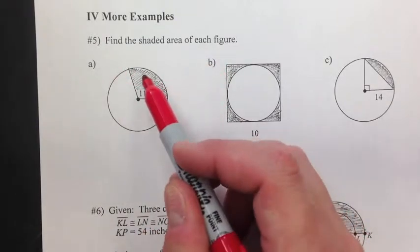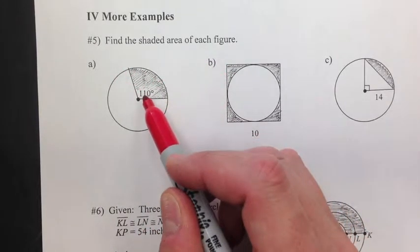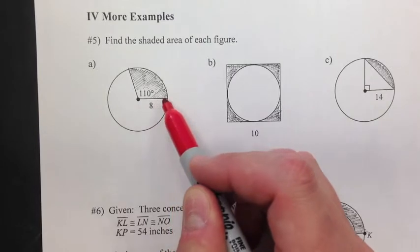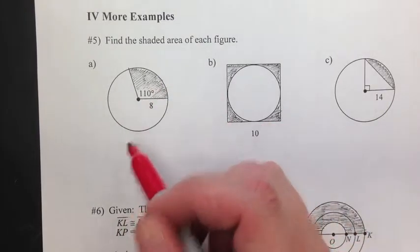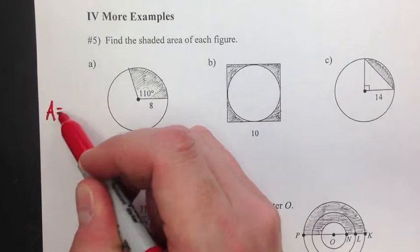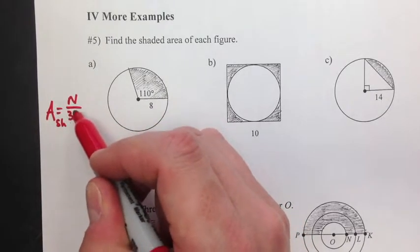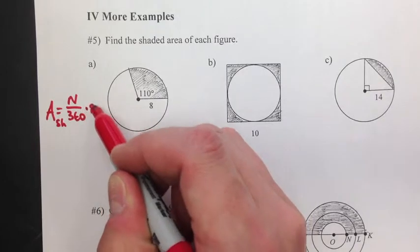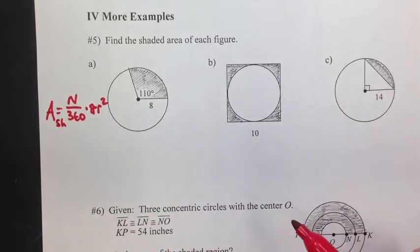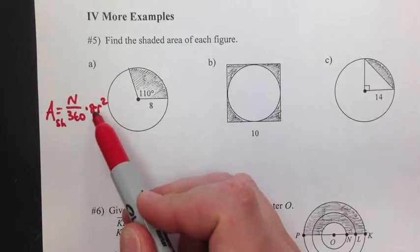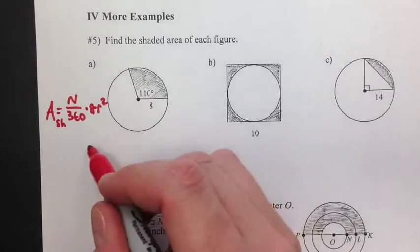So part A, here's your shaded area. Now it's 110 degrees and the radius is 8. The formula area equals area shaded. Take the central angle measure, divide by 360 times pi r squared. Take the fraction. This is the fraction of the whole circle.